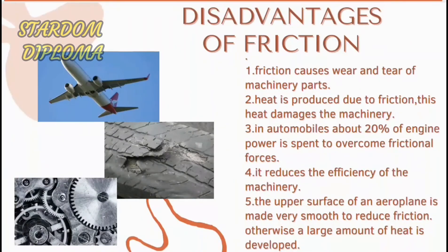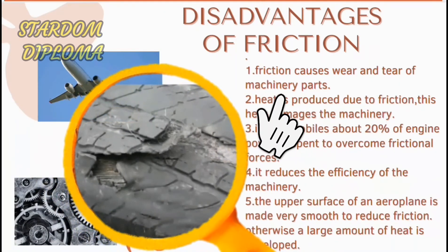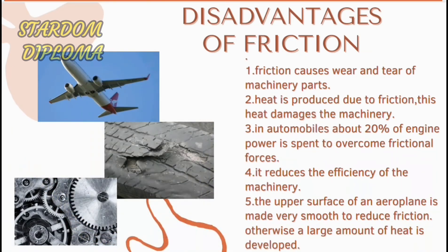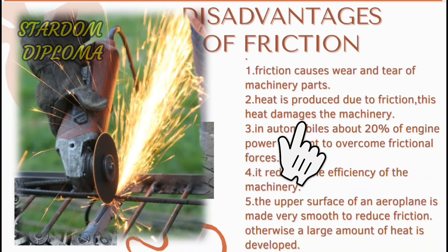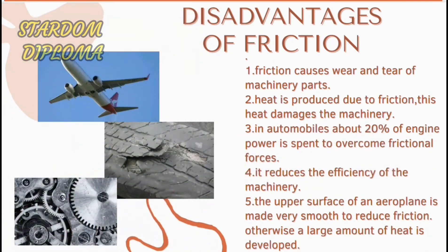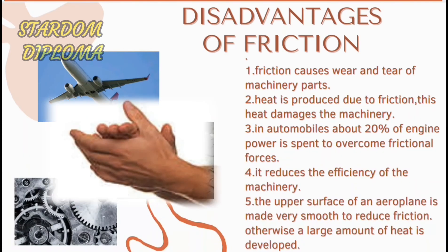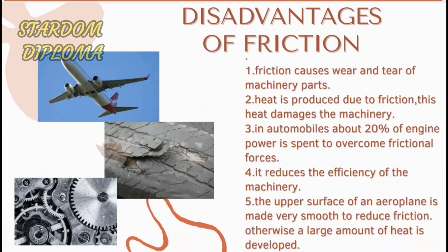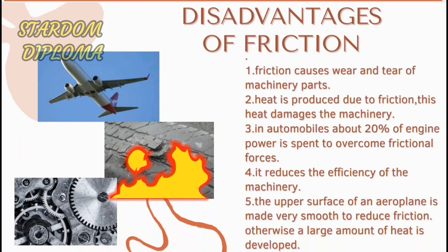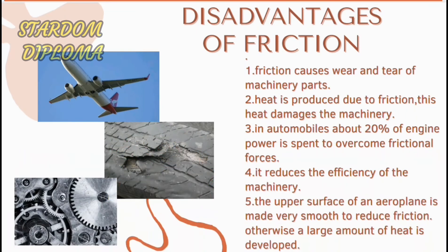Now let us look at the disadvantages of friction. Friction causes wear and tear of machinery parts. As machinery parts are continuously used, friction is produced, and due to this friction, the machinery usually gets damaged. Heat is also produced due to friction, which further damages the machinery. If we rub our hands, a small amount of heat is produced, but in large machinery, a large amount of heat is produced, causing significant damage.